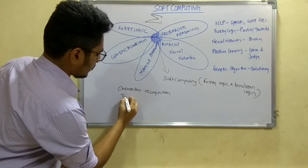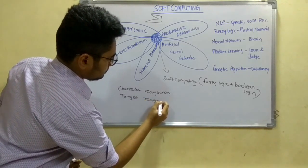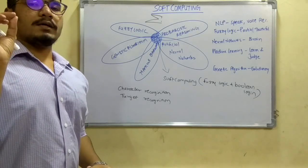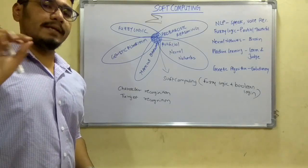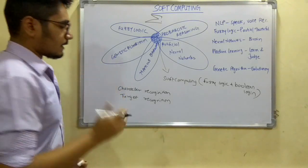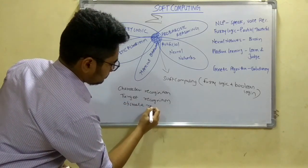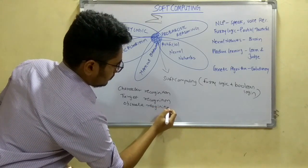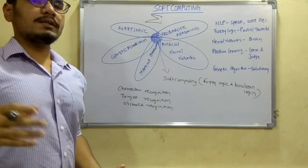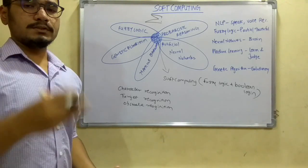Next we have target recognition — for example, in a dart game, at what instance or point you should actually hit the dart. That comes under target recognition. Then we have obstacle recognition, used for autonomous agents or driverless cars — deciding what action to take when a person is crossing the road.